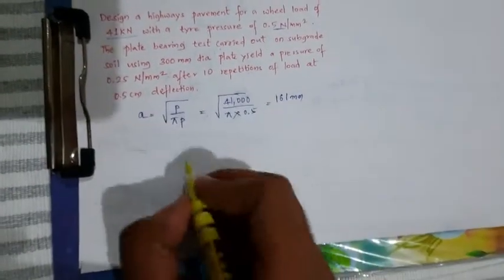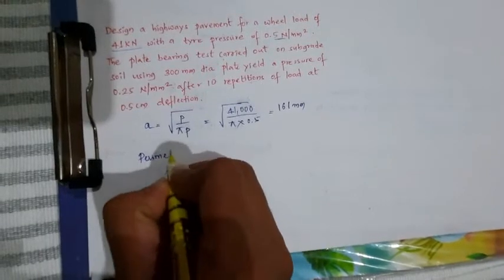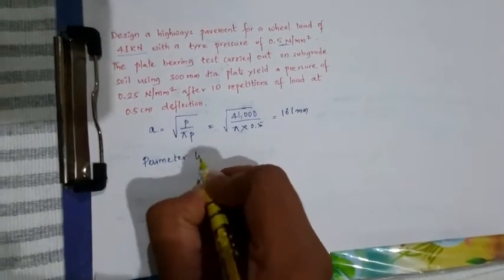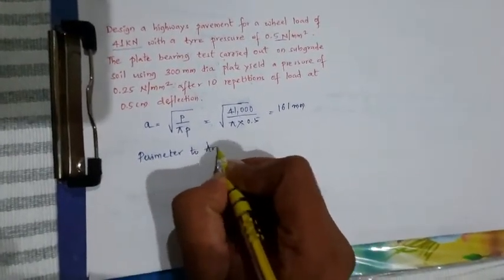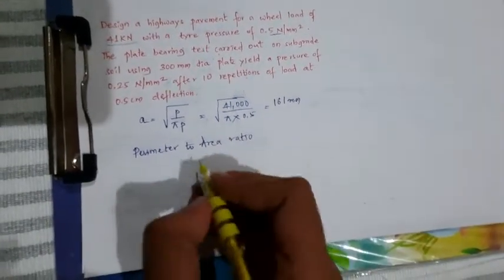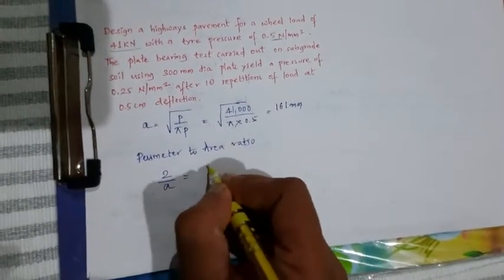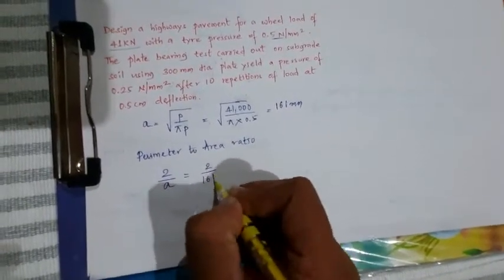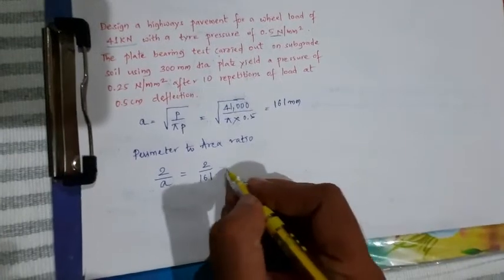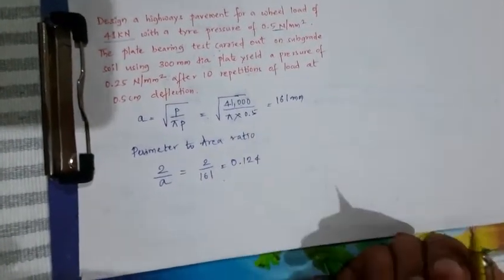Next, perimeter by A ratio, area ratio, that is given by 2 by A, 2 divided by 161 mm, that gives you 0.124 per mm.